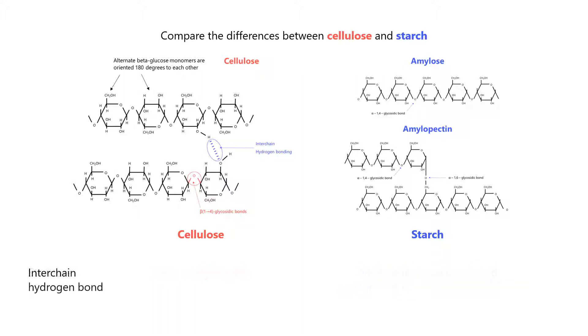Now let's compare whether inner-chain hydrogen bonding occurs in the molecules. In cellulose, the hydroxyl groups of the glucose monomers project outwards and allow for formation of inner-chain hydrogen bonding. This leads to formation of microfibrils. On the other hand, there is no inner-chain hydrogen bonding in starch.